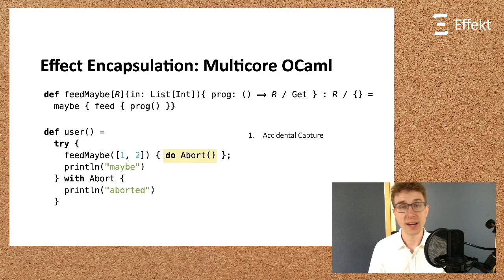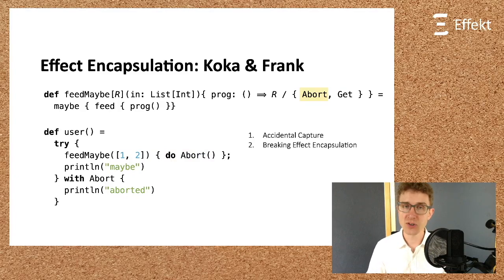First, in a language like Multicore or Camel, the abort effect would be handled by the dynamically closest handler, which is maybe, and the result thus would yield none. In languages like Koka or Frank, the composed feed_maybe handler would simply not type check as is. The inferred effect in Koka would mention the abort effect on prog since it is used under a maybe handler. This also correctly reflects the operational semantics of dynamic handler search, but leaks information into the type signature of feed_maybe. It breaks effect encapsulation.